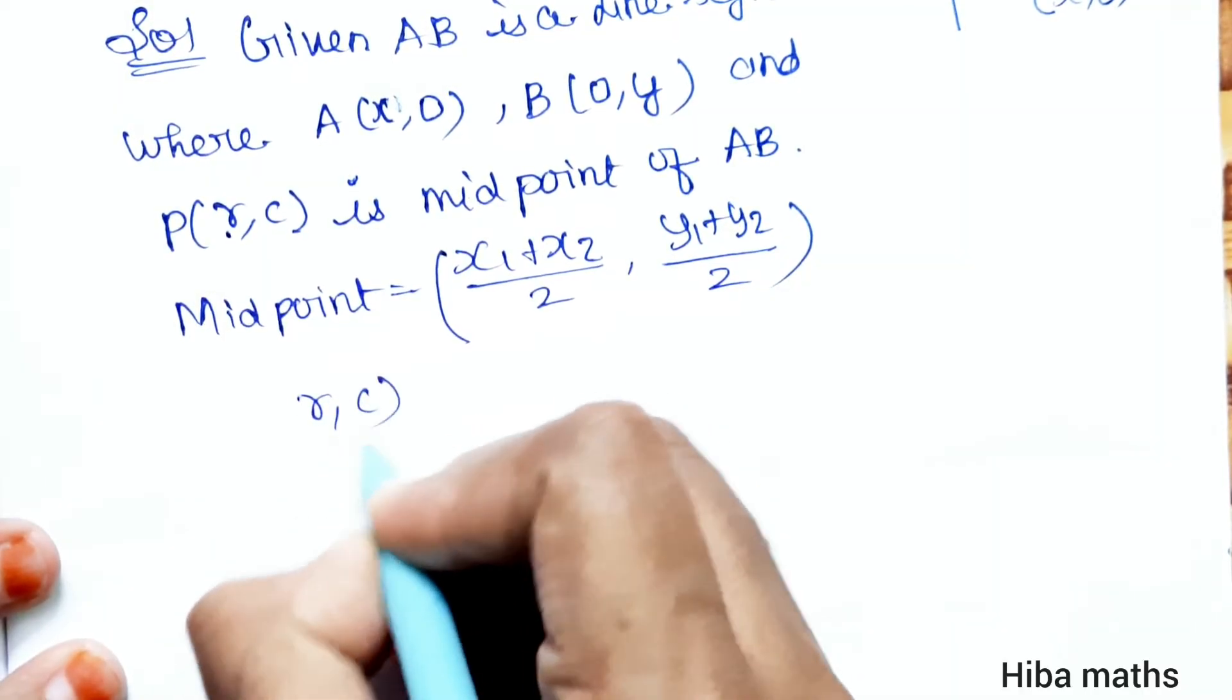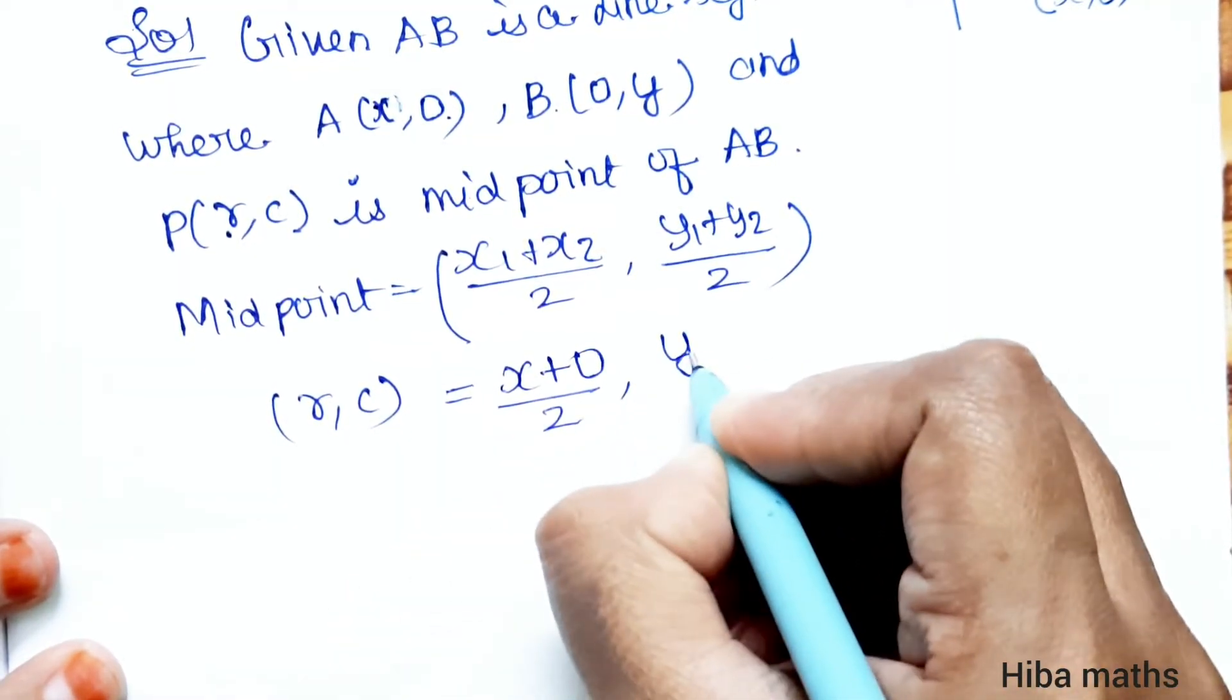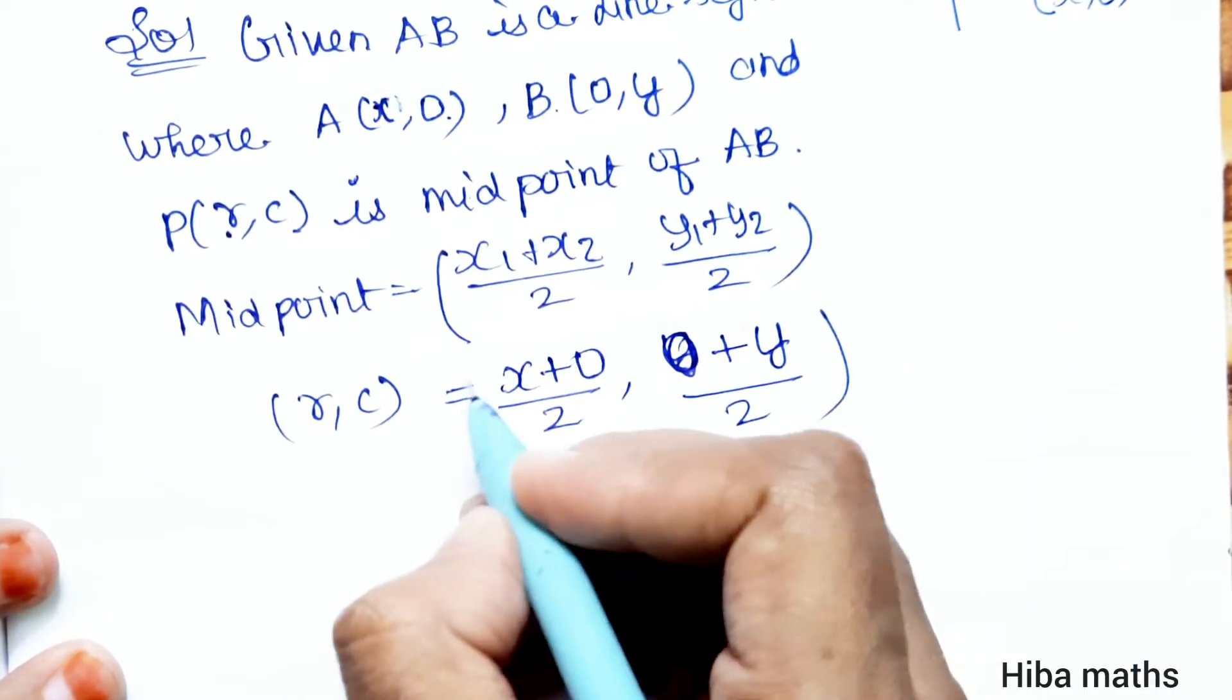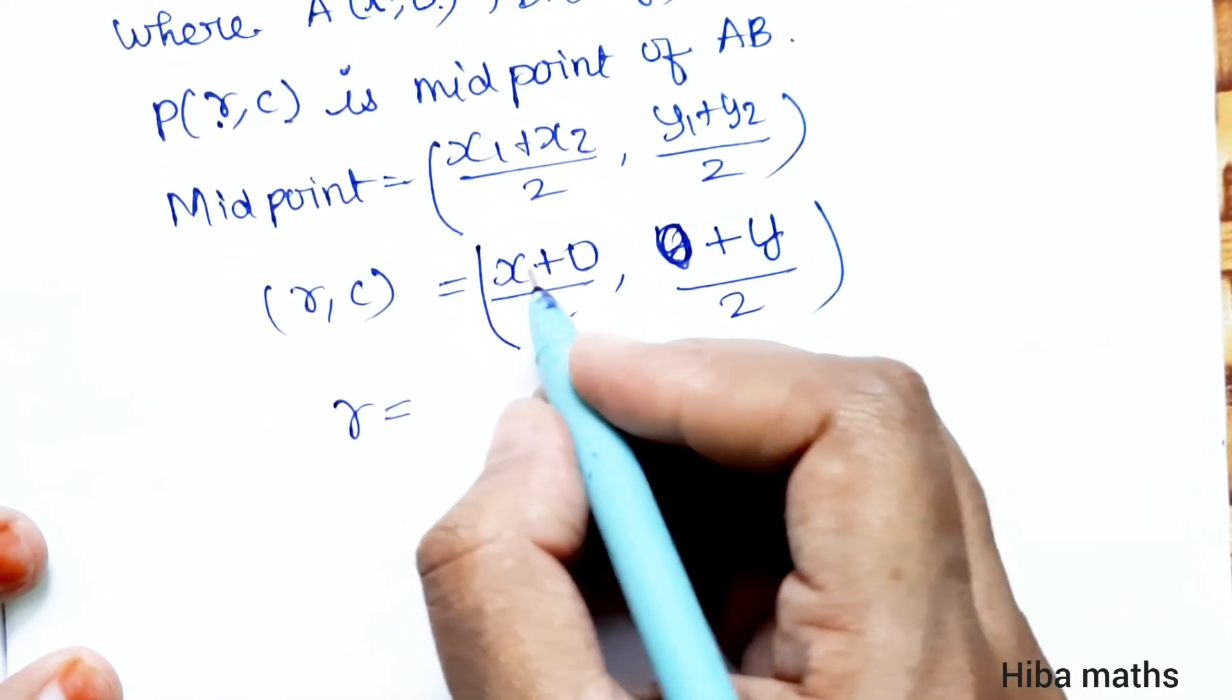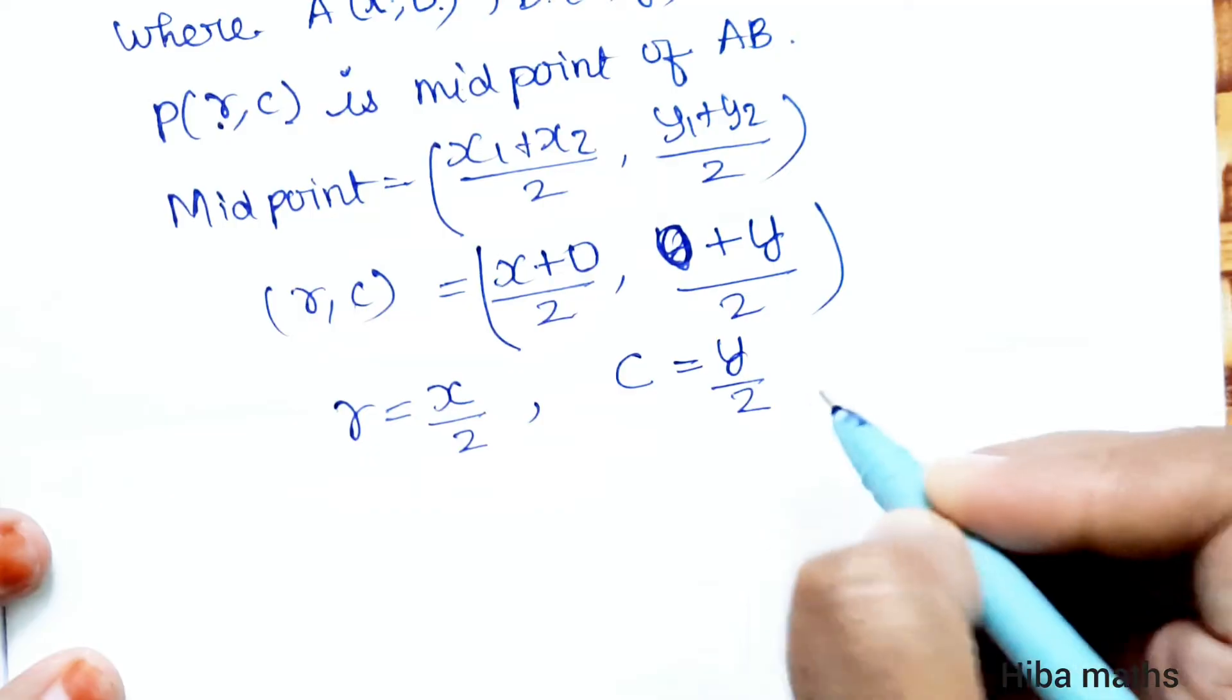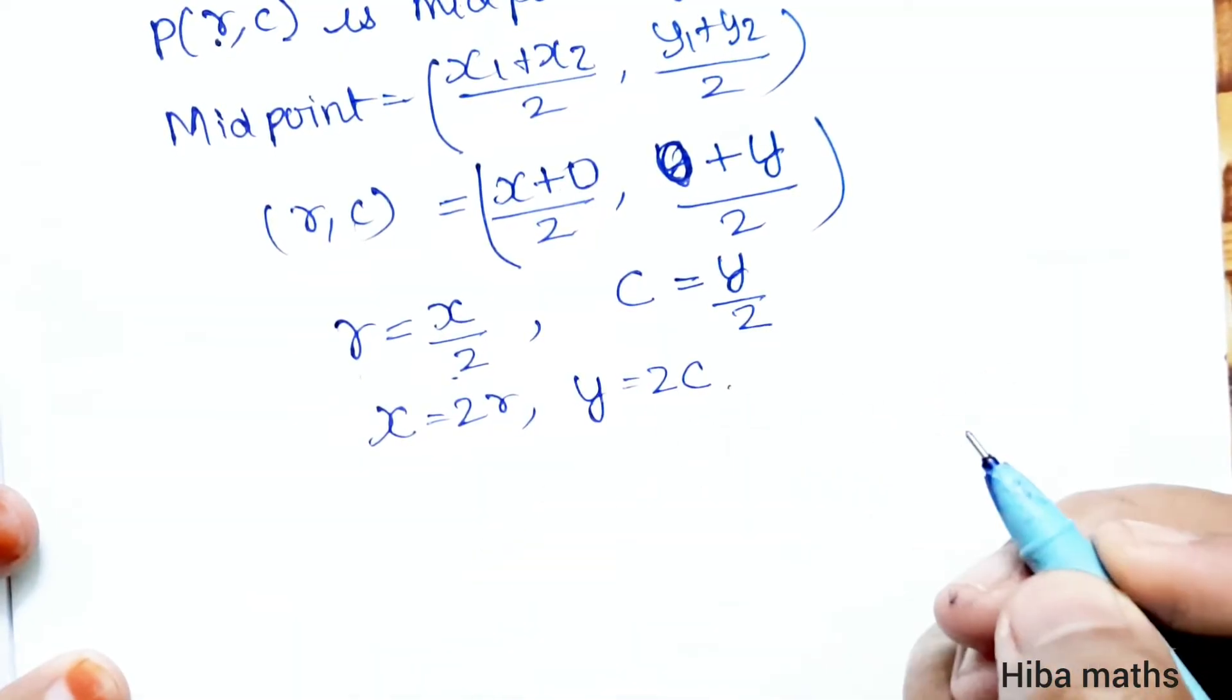So (r,c) is equal to (x plus 0 by 2, y plus 0 by 2). This gives r is equal to x by 2, and c is equal to y by 2. Now solving, x equals 2r and y equals 2c.